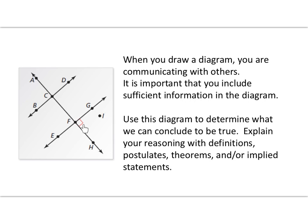So I'm looking at this diagram, and I can conclude that these two lines are perpendicular, they form right angles, because I see the right angle symbol. So I would formally say line EG intersects line AH at a right angle, therefore they are perpendicular.